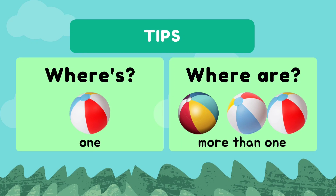Where's is for one, like one ball — where's the ball — while where are is for more than one, like where are the balls.